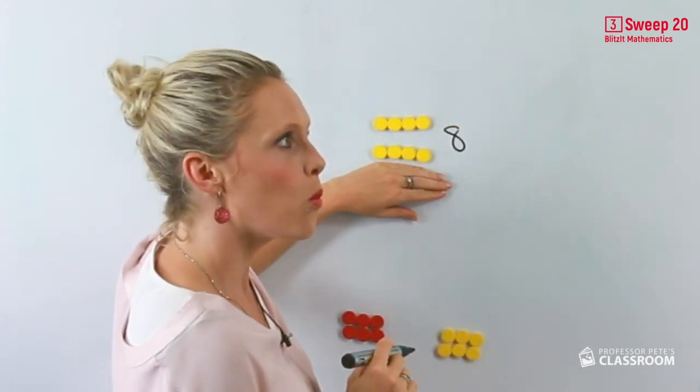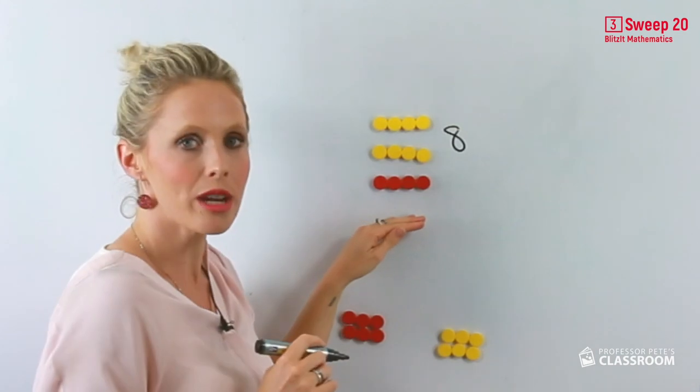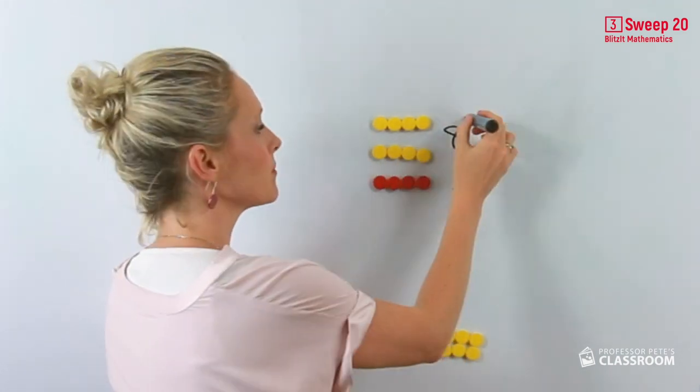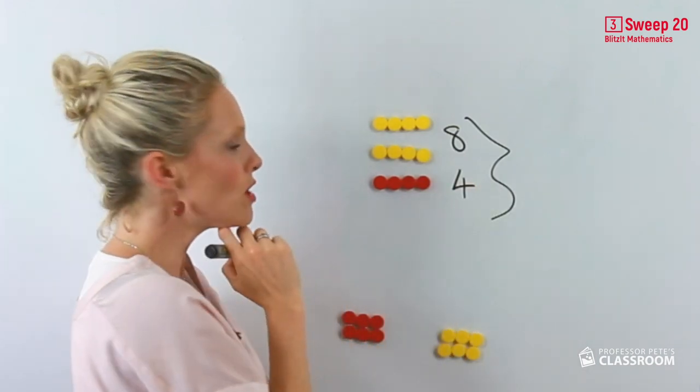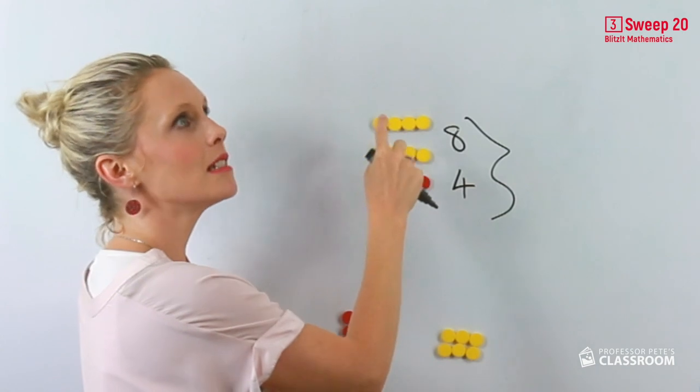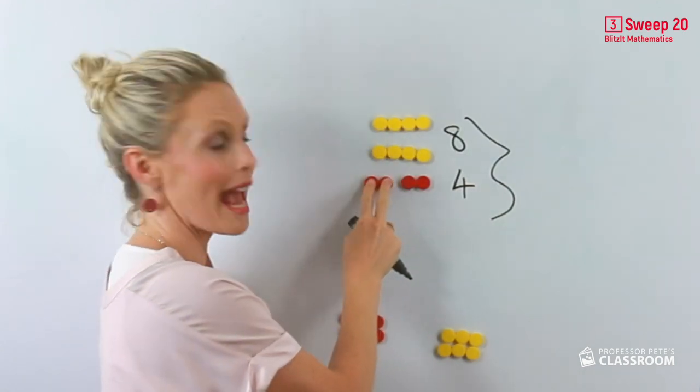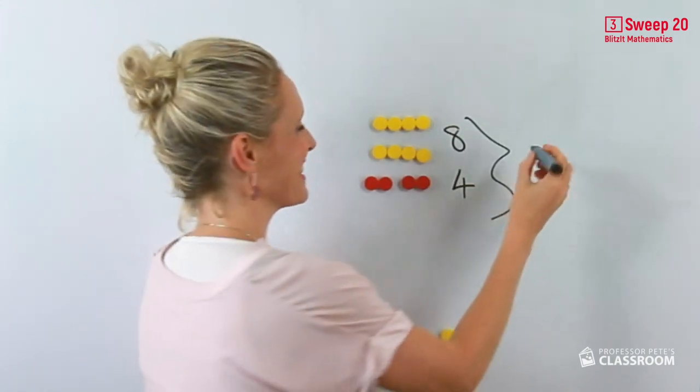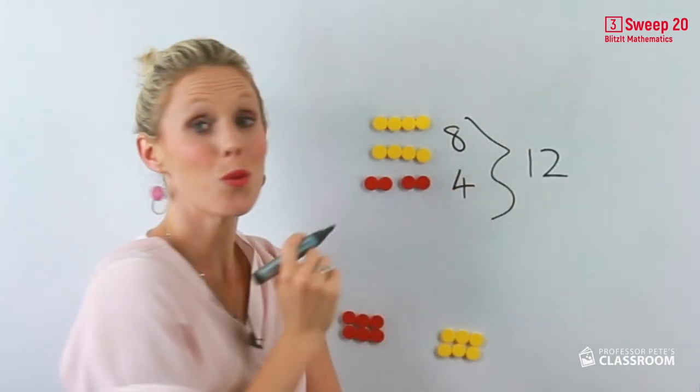Now what would be three groups of four? Here's another four. Well, we know that here we have eight. Eight and two equals ten. Ten and two equals twelve.